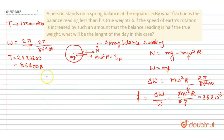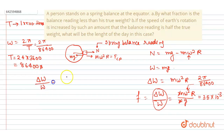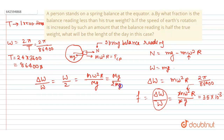Now for the second part: what is the length of the day if the spring balance reads half of the true value? The change in weight equals half the true weight, so ΔW/W = 1/2. This means mω²R / mg = 1/2, so ω²R = g/2.